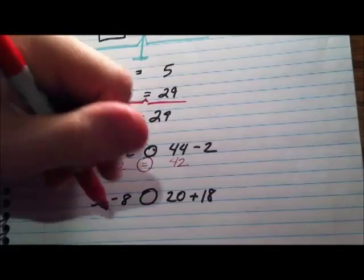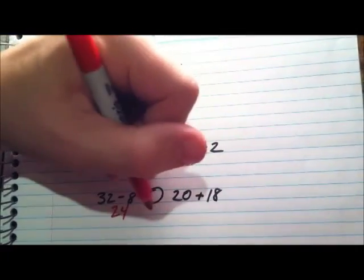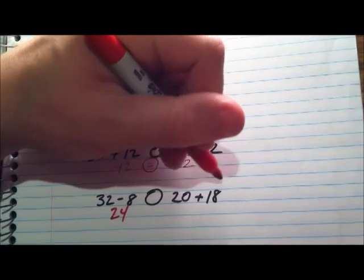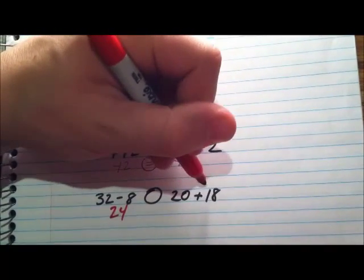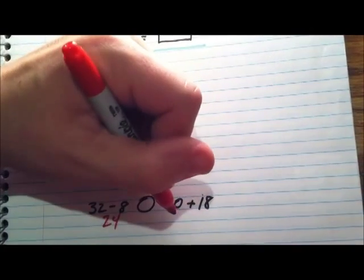32 minus 8 is 24. And then over here, we have 20 plus 18. So that's 20 plus 10 plus 8. 20 plus 10 is 30. 30 plus 8 is 38.